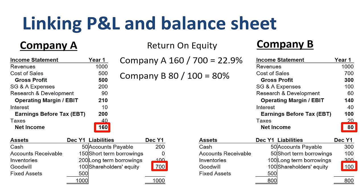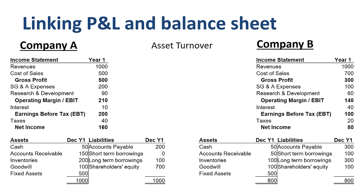While company A has higher profit margins, as we saw in the income statement analysis, company B has a much higher financial leverage, as we saw in the balance sheet analysis. There is a third component to the return on equity calculation: the financial ratio called asset turnover. Asset turnover looks at how much revenue is generated by the company with the assets it has. For company A, asset turnover is 1 — 1,000 in assets on the balance sheet generates 1,000 in revenue in the income statement. For company B, asset turnover is 1.25.